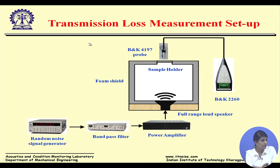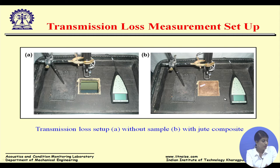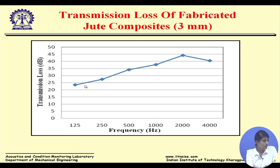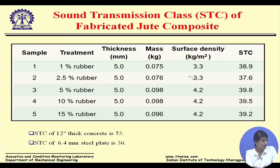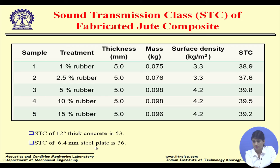For transmission loss measurement, we use a setup per SAE J1400 standard. We measure sound intensity with and without the sample to calculate transmission loss. The STC results of the fabricated jute composite show: 1% rubber-treated jute composite has STC of 38.9, and 2.5% shows STC of 37.5. For comparison, 12-inch thick concrete has STC of 53, and 6.4 mm steel plate has STC of 36 — so jute composite is quite comparable and viable for sound blocking.